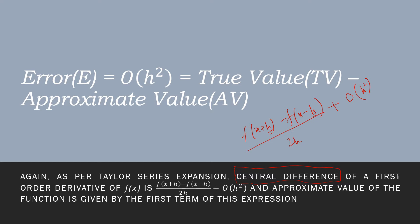What happens is, ignoring all other higher order terms, the solution of the partial differential equation by the central difference method would be this way. Here, what happens is we try to approximate the partial differential equation with the help of Taylor's expansion and the central difference method. As it is an approximate value, there will be some error.